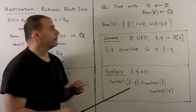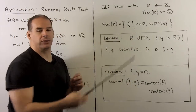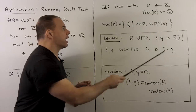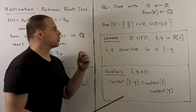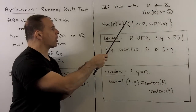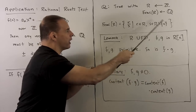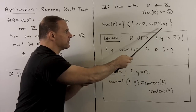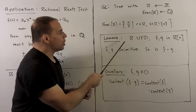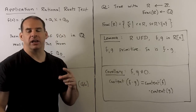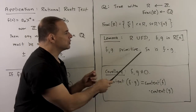To show Gauss's lemma, we'll prove it in general: we replace the integers with a UFD R and replace the rationals with the fraction field over R — that is, all fractions r/s where r is in the UFD and s is a non-zero element of the UFD. First, we have the lemma: if R is a UFD and f and g are primitive polynomials in R[x], then their product is also primitive. An immediate corollary is that if f and g are non-zero, the content of f·g equals the product of their contents.